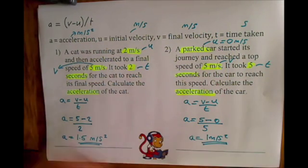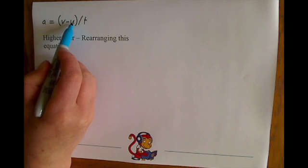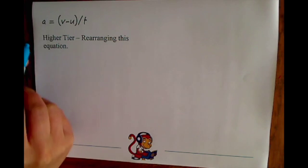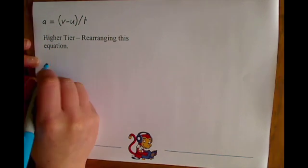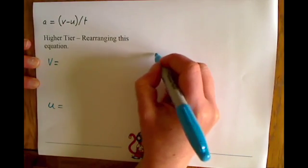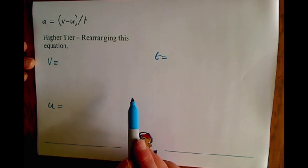That's the kind of questions you'll get on foundation and higher tier. The next part is for higher tier only. For higher tier they might make things more complicated by asking you to calculate v, u, or t, and therefore you'll need to rearrange the equation. Foundation normally just asks you to work out acceleration, but for higher tier think about how you can rearrange to make v equals, u equals, and t equals. Pause the video now, try to rearrange it yourself, then come back and check your answers.